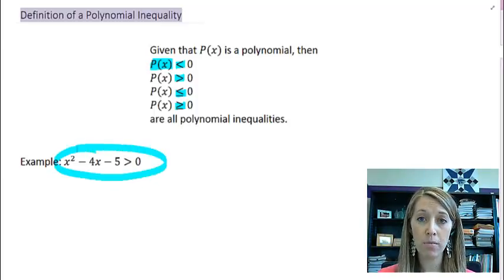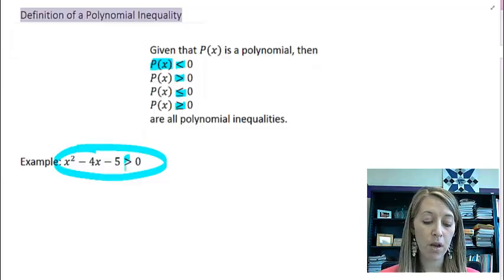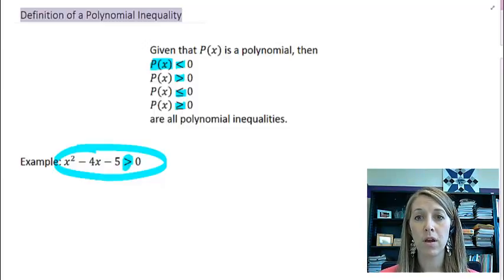For an example, we have this one here: a polynomial expression on the left, x squared minus 4x minus 5, and then the inequality part is greater than zero. I just picked one of the inequalities here, but any one of them could go there and it's all going to be interpreted the same way; just the answer is a little bit different.